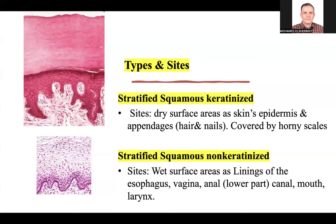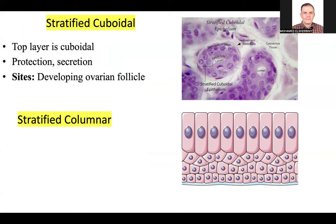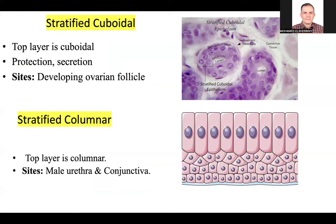For stratified cuboidal — the top layer is cuboidal — we find it in the follicles of certain glands. For stratified columnar, the top layer is columnar in shape. We find it in the male urethra and in the conjunctiva of the eye — the white of the eye is covered by a layer called the conjunctiva.